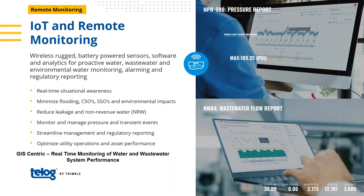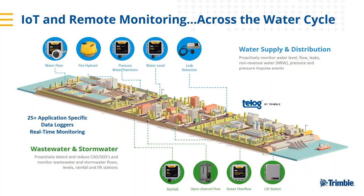I want to briefly touch on the remote monitoring capabilities before rolling into the valve exercising application, just so you know the platform has a breadth of capabilities beyond mapping, work management, and exercising valves. Trimble makes over 25 different types of data loggers that can be installed anywhere on your water and wastewater network. These are wireless, cellular-enabled intelligent data loggers that store data throughout the day, and can send alarms via text message or email if problems are noticed in real time.